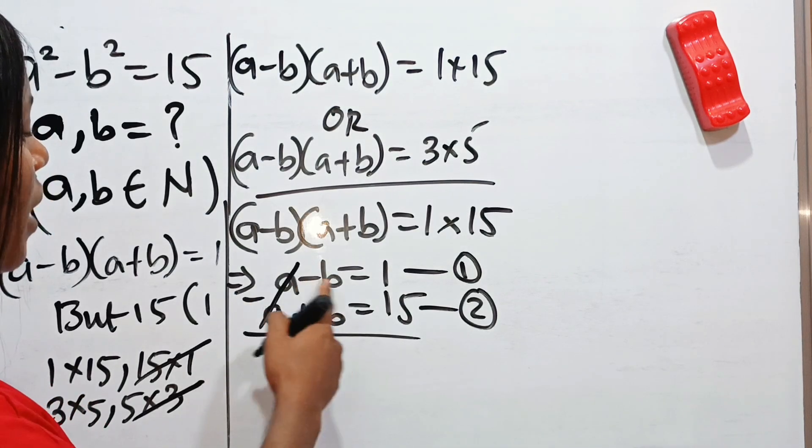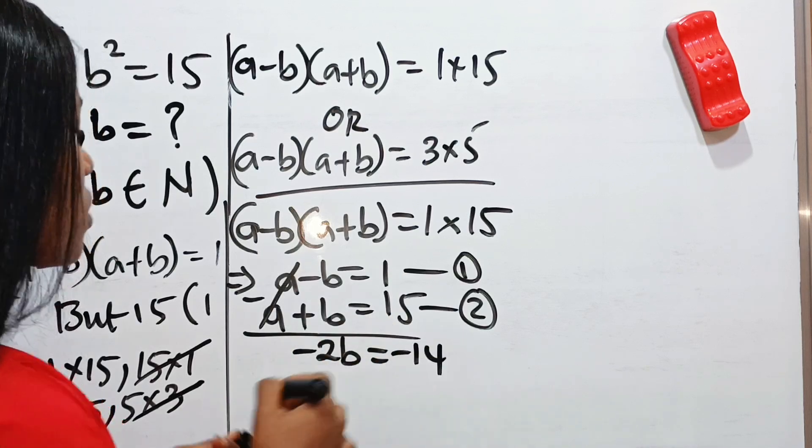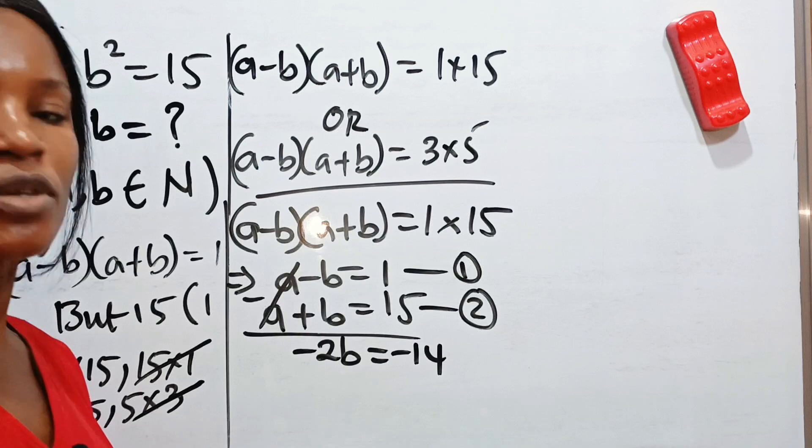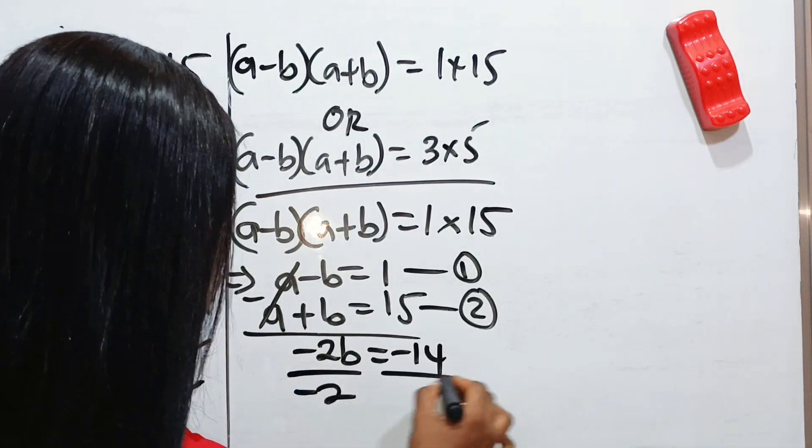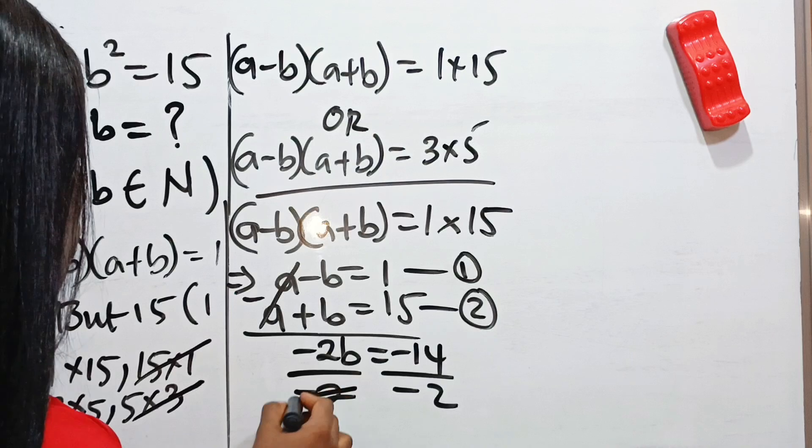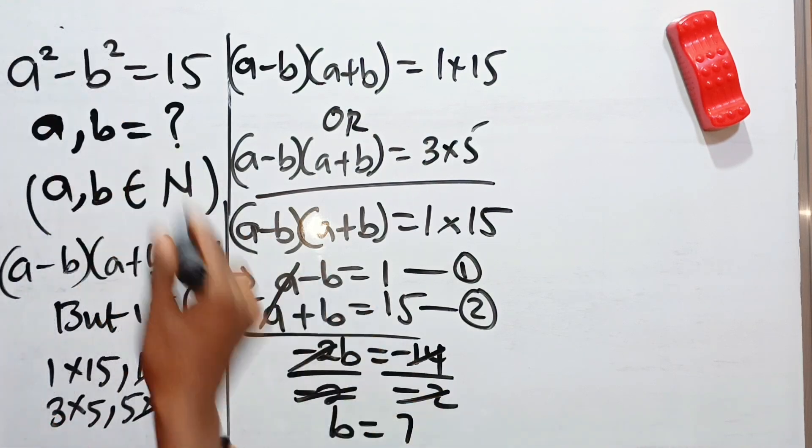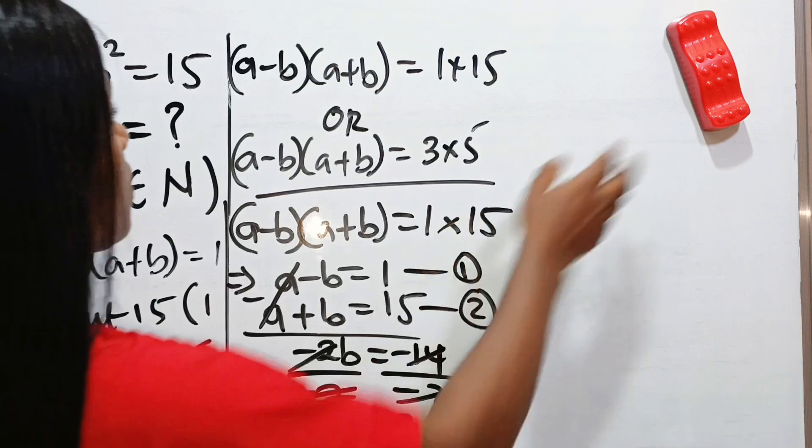Then minus b minus b is minus 2b is equal to 1 minus 15 is minus 14. So to get the value of b, we divide both sides of this equation by minus 2. So we divide by minus 2 and divide by minus 2. So we have that b is equal to 7. If b is equal to 7, I don't know if you can see this, but just know that when we divide this by minus 2, we get b is equal to 7.